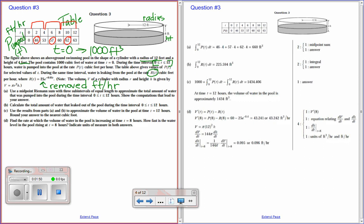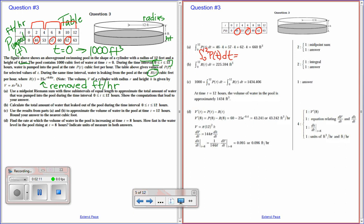Now look at the changes from 0 to 4. So you can see here, then, so we're finding the amount of water being pumped into the pool. So that's why we went 46 times 4, 57 times 4, and then 62 times 4. And that's 660 feet cubed. So that would be the answer. Notice you get one for the setup and one for the answer.